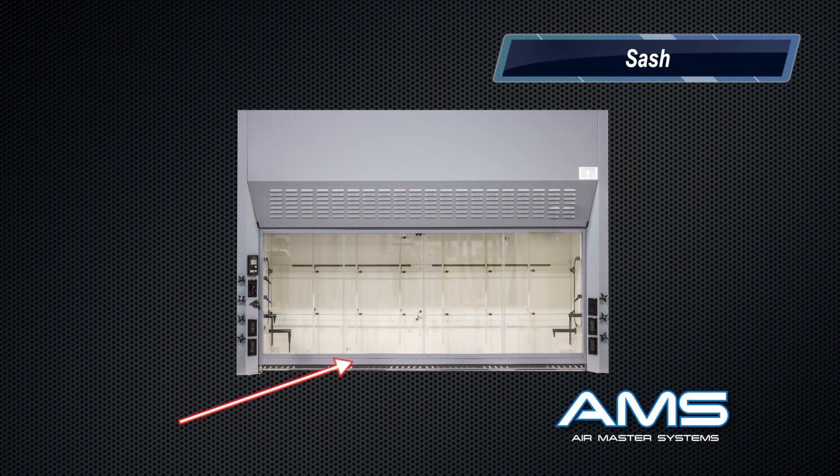The sash is the protective sliding glass on the front of your fume hood. The sash is also to help protect your body from any unexpected physical harm like a bad reaction in the fume hood or potentially worse an explosion.